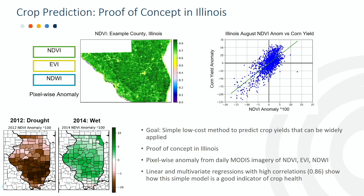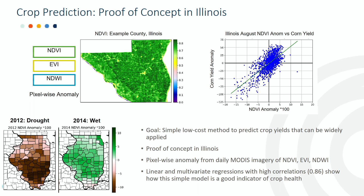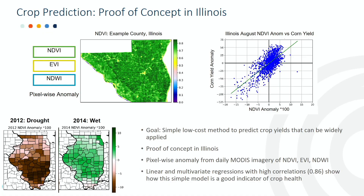For every county in Illinois, I computed monthly averages and anomalies of NDVI, EVI, and NDWI. These vegetation indices are strongly correlated to crop yields, shown here for every county and year in Illinois since 2000. During a drought year, there are very negative NDVI anomalies, meaning that these are good predictors of crop failure. A multi-year regression with all three indices over the course of the growing season produced a correlation of 0.86, showing how this simple method is a good indicator of crop health.